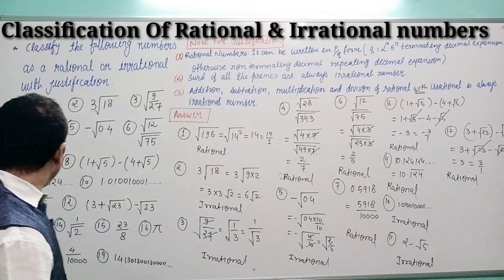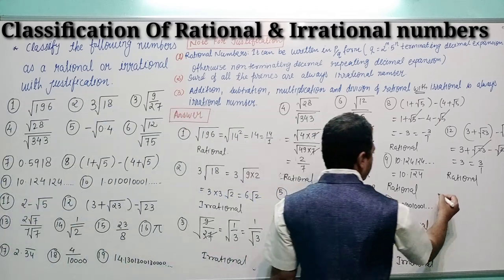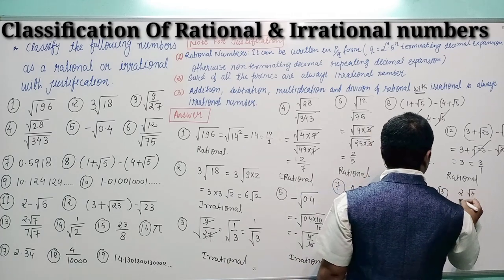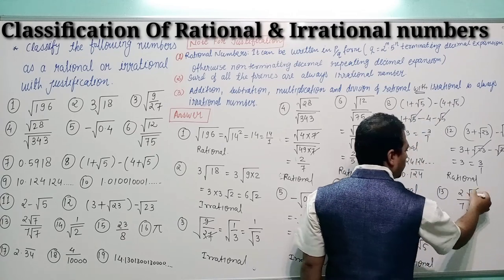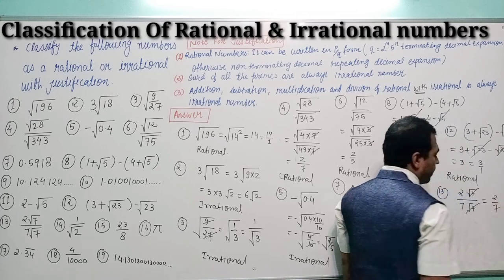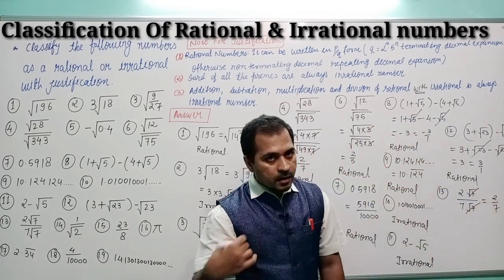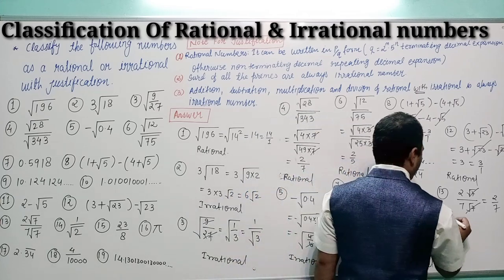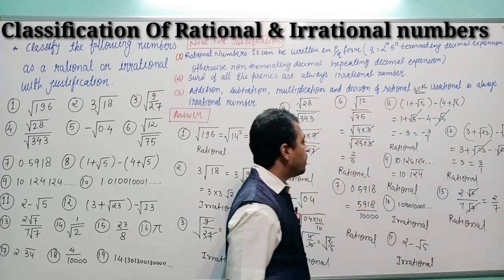Question number 13: (2/√7) ÷ (7/√7). This is very simple — √7 and √7 cancel out, leaving 2/7. Since 2/7 can be expressed in p/q form, it is also rational.